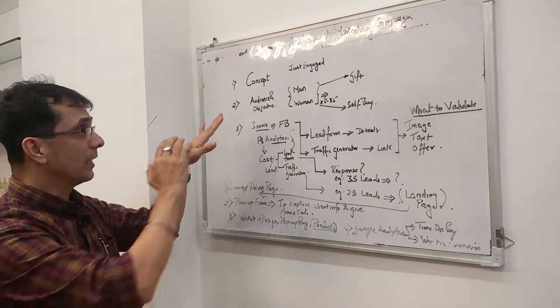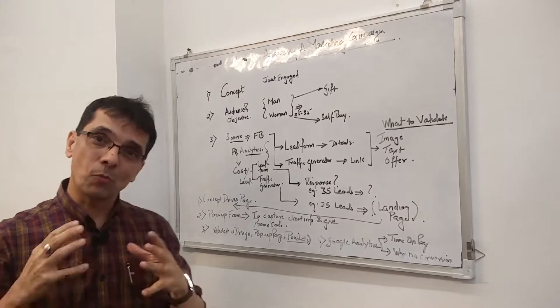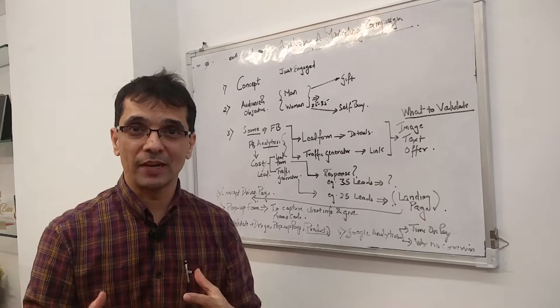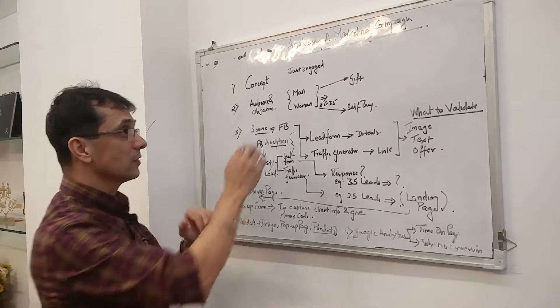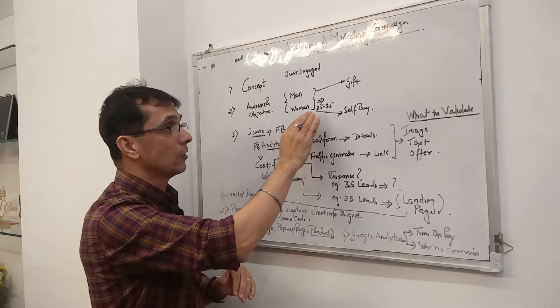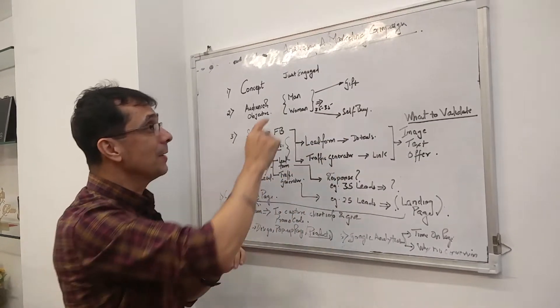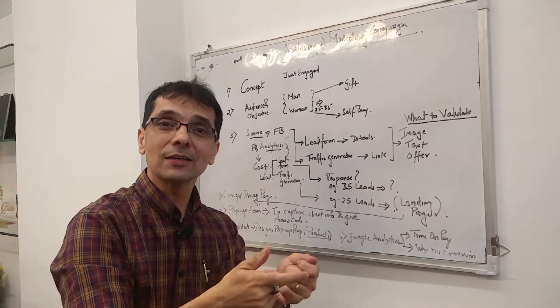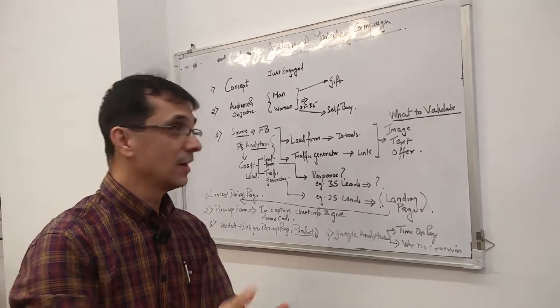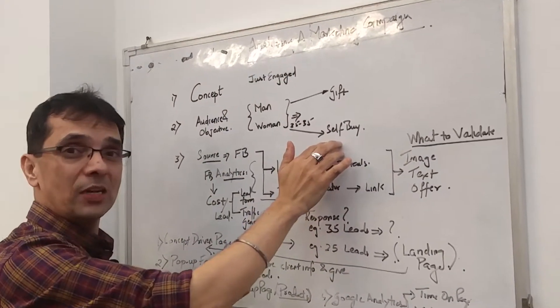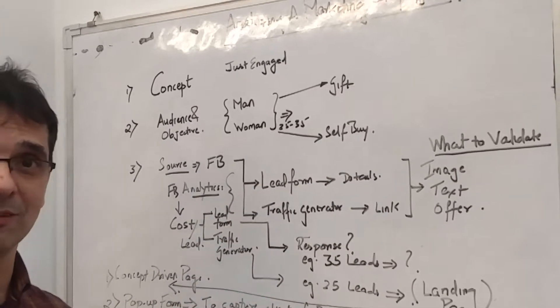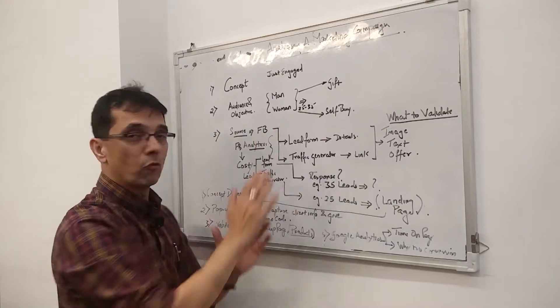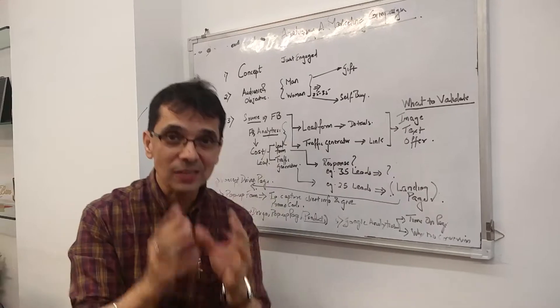Second thing is be clear about your audiences and the objective of that audience in the campaign. What should they get out of it? Our audience is a man and a woman both, 25 to 35 years. Each has a different objective. The man's objective is gifting it to his fiancée, but the woman, since they're in jewelry, her objective is to buy for herself. The pitch is different.